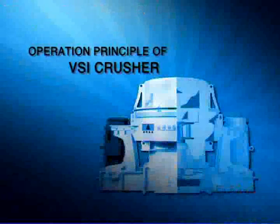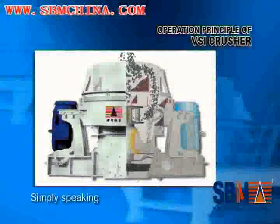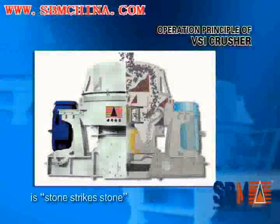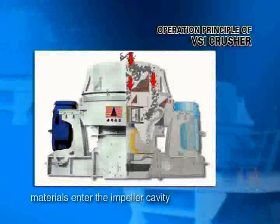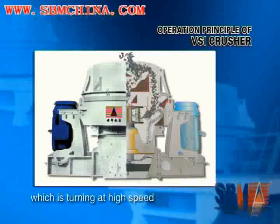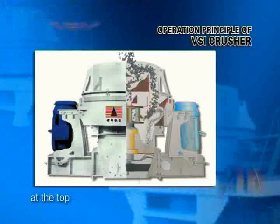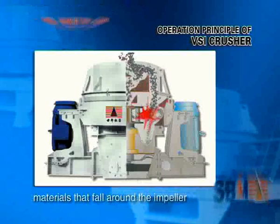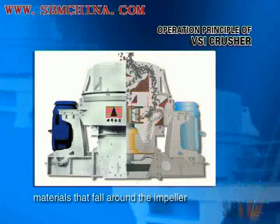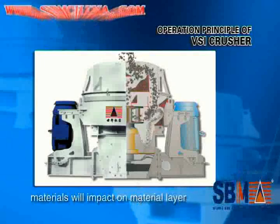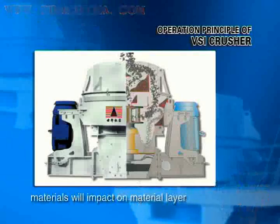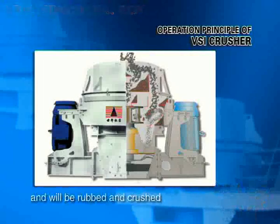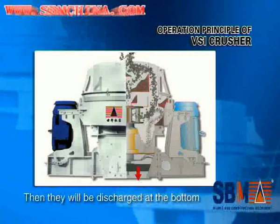Operation Principle of VSI Crusher: Simply speaking, the operation principle is stone-on-stone. Materials enter the impeller cavity, which is turning at high speed, at the top. With centrifugal force, the materials impact other materials falling around the impeller. After interacting and striking, materials impact a material layer between the impeller and steel frame many times, and are rubbed and crushed. Then they are discharged at the bottom.